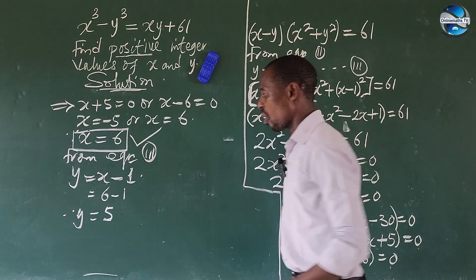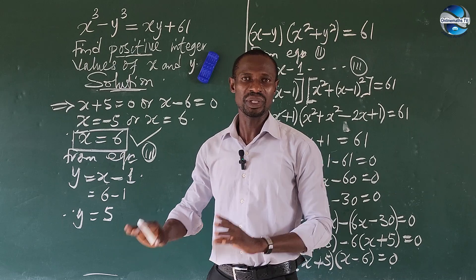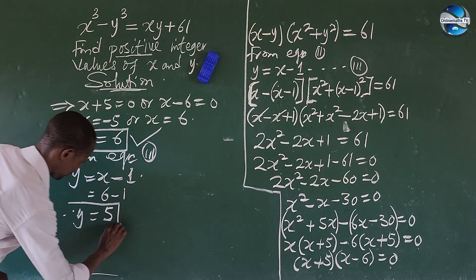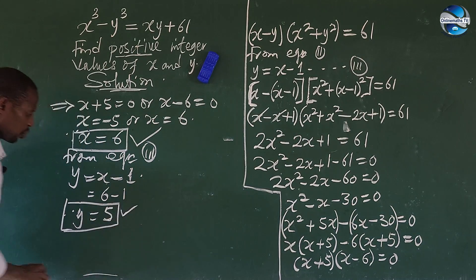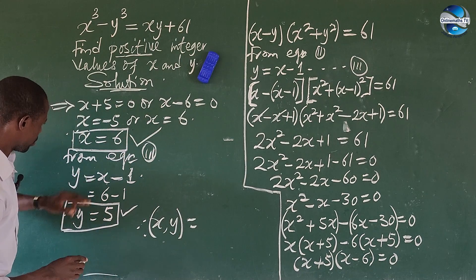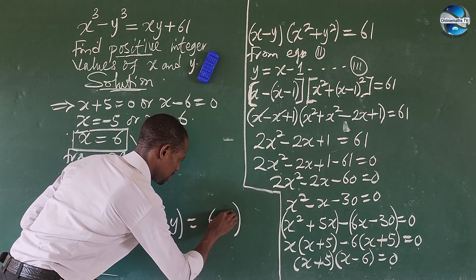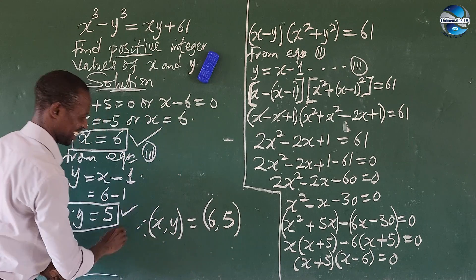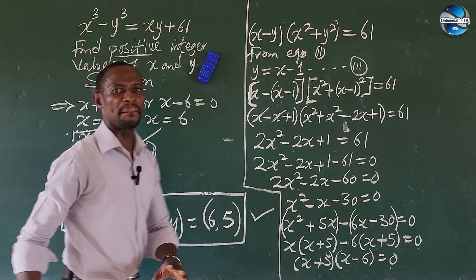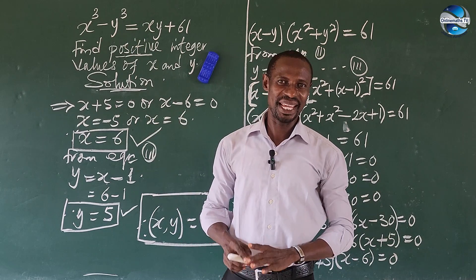We don't need to look for a second y value because it would give a negative result, which we don't want. Therefore, the solution is (x, y) equals (6, 5). These are the positive integer values of x and y that satisfy this Russian math olympiad problem.